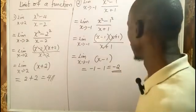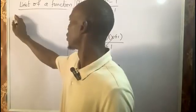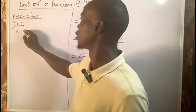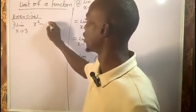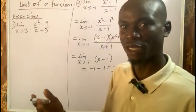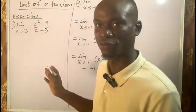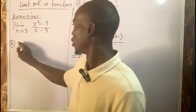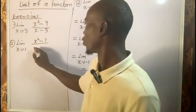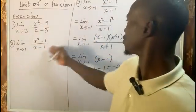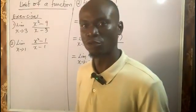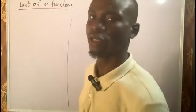Here are some exercises you might want to take home. First: limit as x tends to 3 of (x² minus 9) over (x minus 3) — if you can break 9 into a perfect square, you can split it using the difference of two squares. Second: limit as x tends to 1 of (x² minus 1) over (x minus 1). Attempt these on your own as a follow-up to show you understand what we've done.